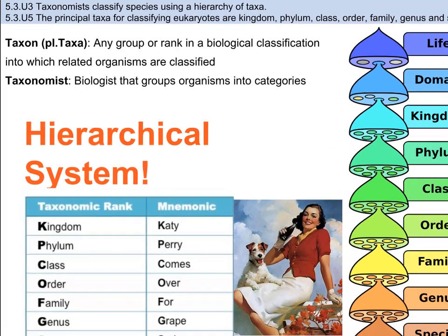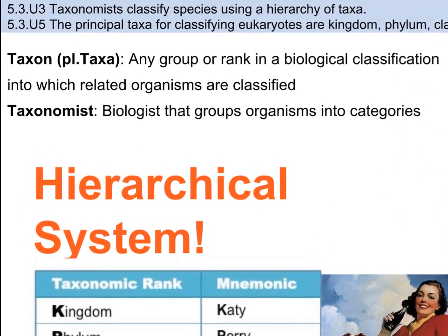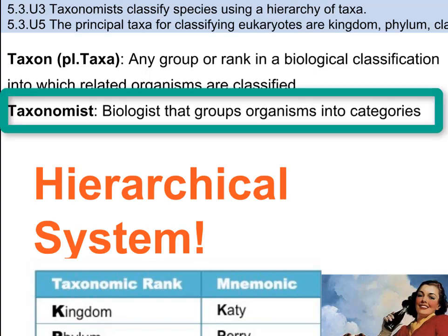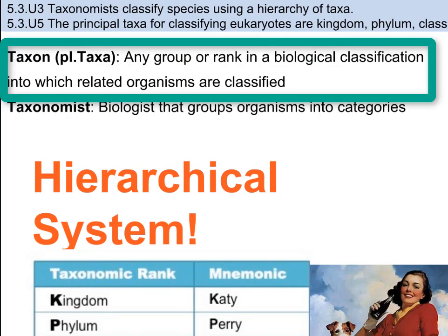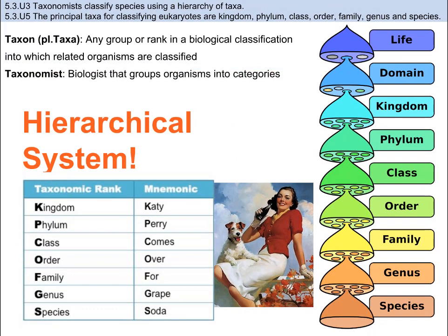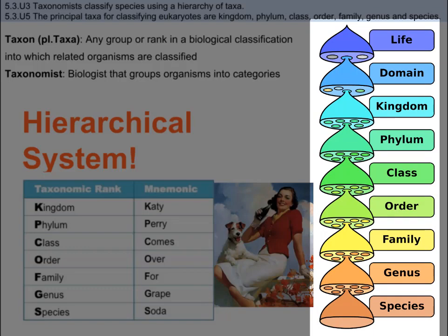So who are these people that classify things and what do they do? The specific name for biologists who classify organisms into categories are taxonomists. They classify organisms into groups or ranks, also known as taxa — which is the plural. The taxa that taxonomists use go from large to small, and every taxonomist uses this system regardless of location in the world. At the very largest end, we have life. At the very smallest classification, we have the species.